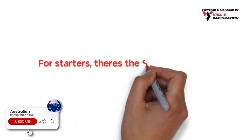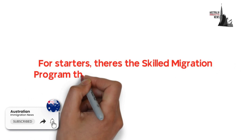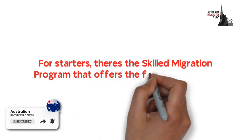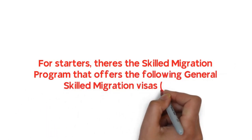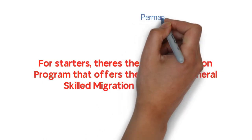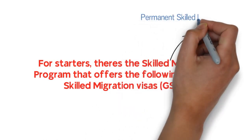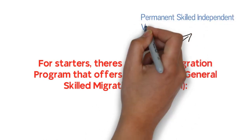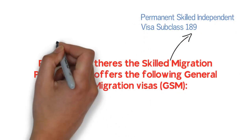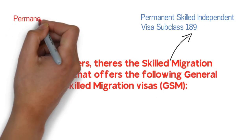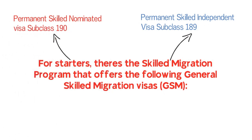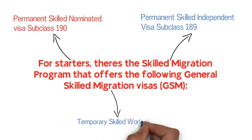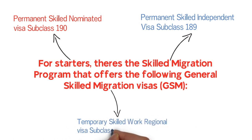For starters, there's the Skilled Migration Program that offers the following General Skilled Migration visas, also known as GSM: the Permanent Skilled Independent Visa Subclass 189, the Permanent Skilled Nominated Visa Subclass 190, and the Temporary Skilled Work Regional Visa Subclass 491.